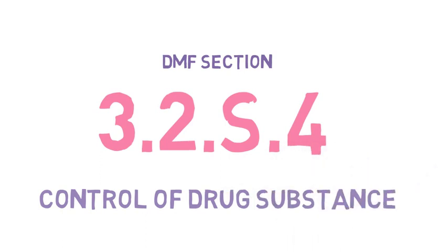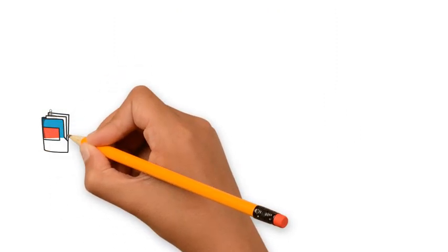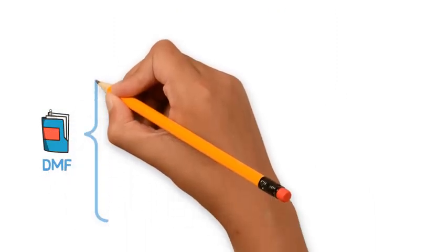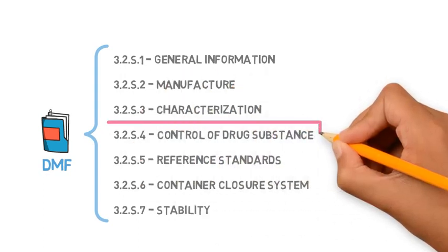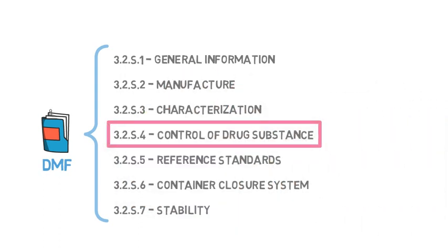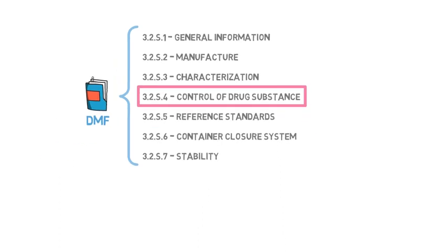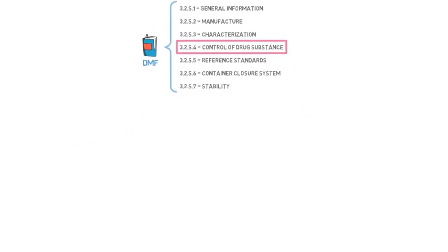DMF Section 3.2.S.4 Control of Drug Substance. The DMF in CTD format consists of seven sections. In this video, we will talk about Section 3.2.S.4, which will describe how the manufacturer performs the quality control of the API.